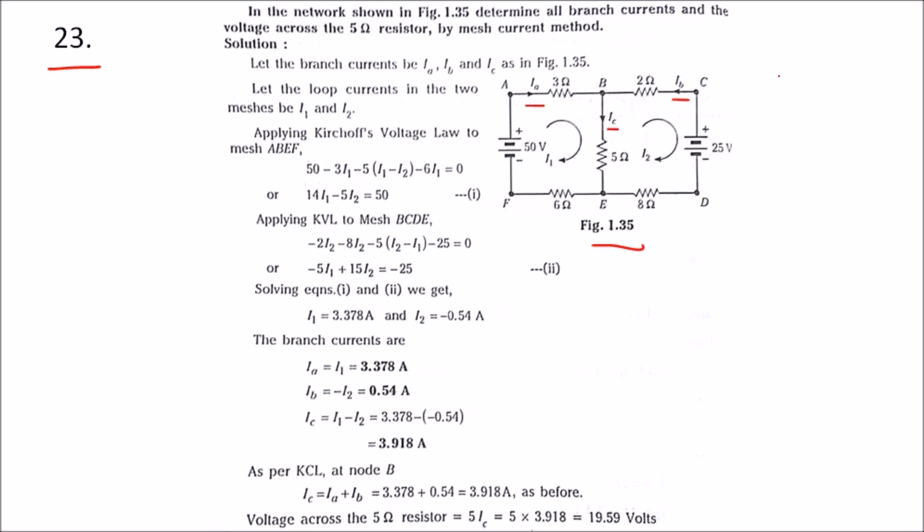First we have to find Ia, next is Ib and Ic. We also have to find the voltage across 5 ohms. Let us call this voltage V5. So we have to find all four values.